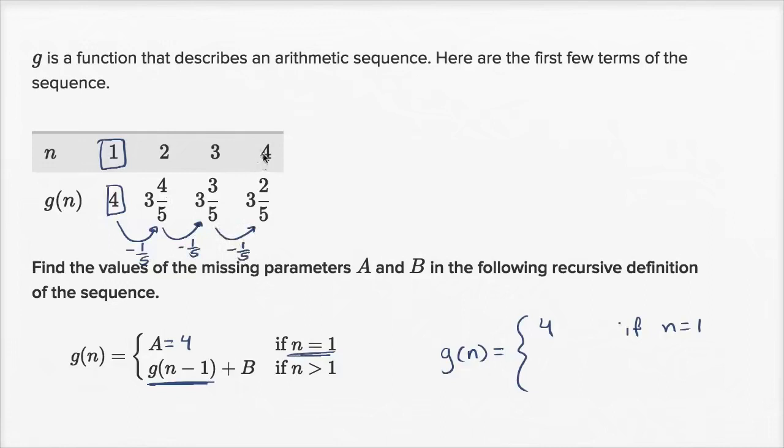One way to think about it, if we were to go the other way, we could say, for example, that g(4) equals g(3) minus 1/5. You see that right over here. g(3) is this. You subtract 1/5, you get g(4).